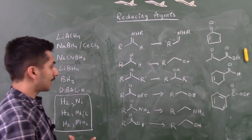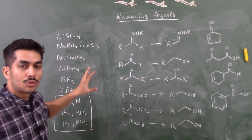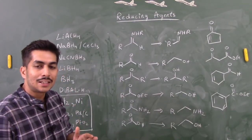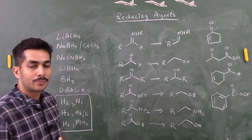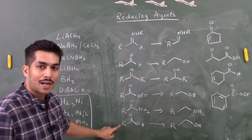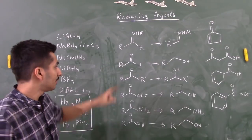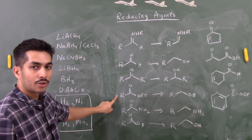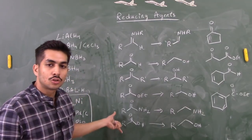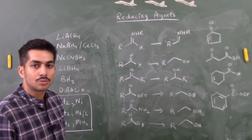Lithium Borohydride (LiBH4) can be thought of as a sister reagent to LiAlH4 — a slightly milder version. While LiAlH4 reduces everything except carboxylic acids, LiBH4 can reduce esters, ketones, aldehydes, and imines, but it is not able to reduce carboxylic acids or amides.